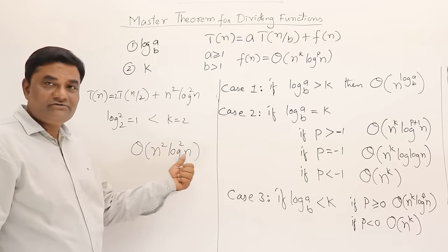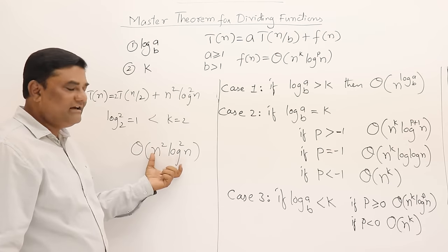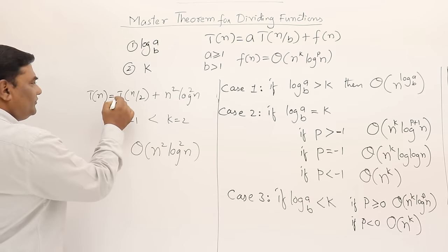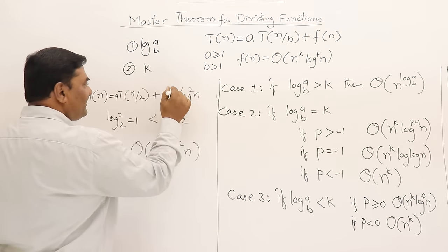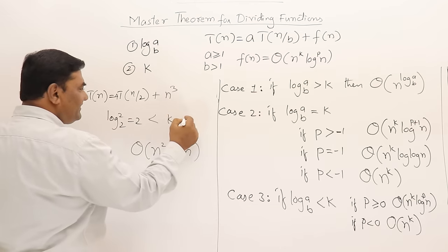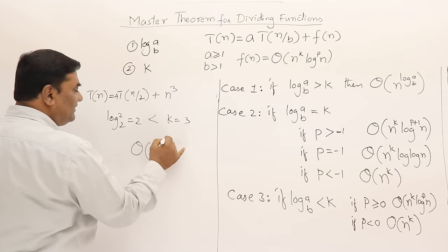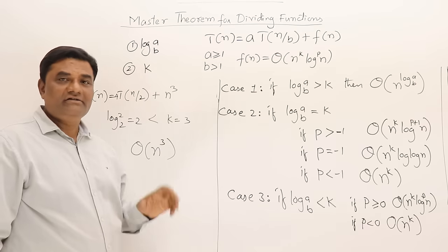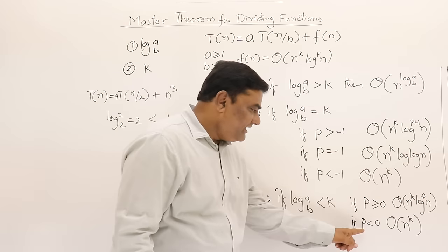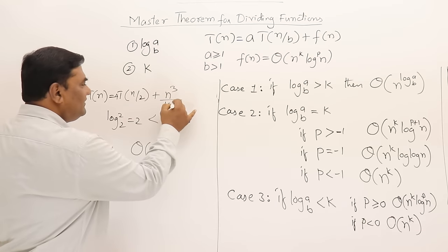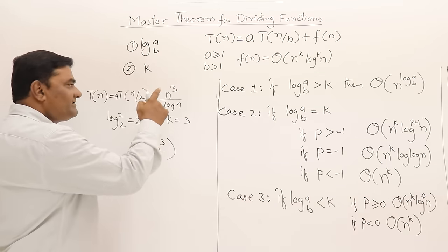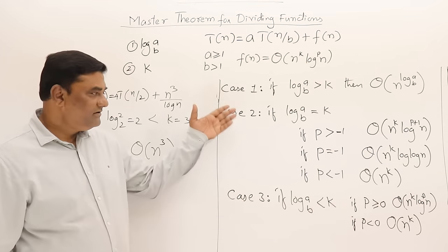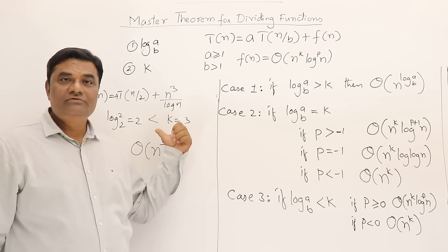Whenever the power of k is greater than log_b(a), directly take f(n) as the answer. For example, T(n) = 4T(n/2) + n³: log(4) base 2 = 2, k=3. Since 3 > 2, answer is Theta(n³). Even if f(n) has a log term in the denominator, since k is still greater, just take n^k and ignore the log. These are the cases of Master's Theorem demonstrated with examples.